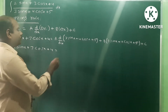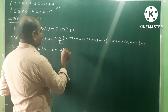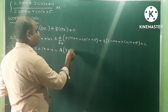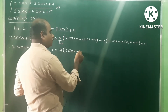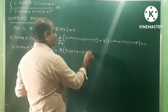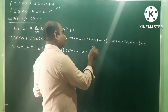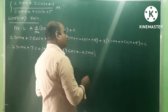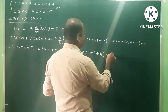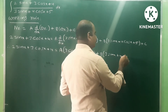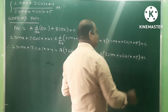Now find d/dx of the denominator (3sinx + 4cosx + 5): derivative of sinx is cosx, so 3·cosx; derivative of cosx is −sinx, so 4·(−sinx) = −4sinx; derivative of 5 (constant) is 0. So d/dx(denominator) = 3cosx − 4sinx. Then: b·(3sinx + 4cosx + 5) + c.